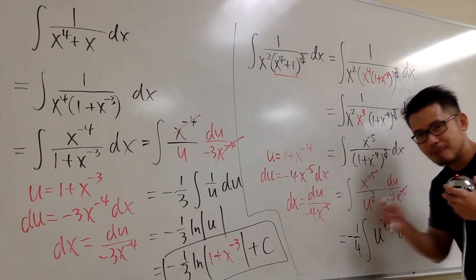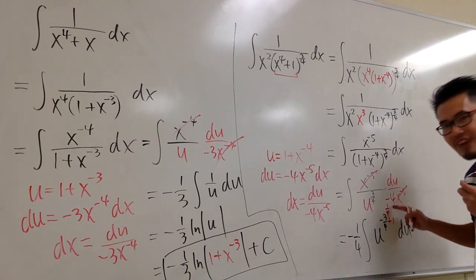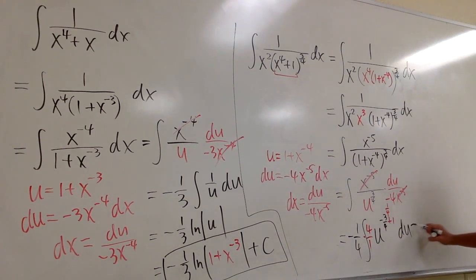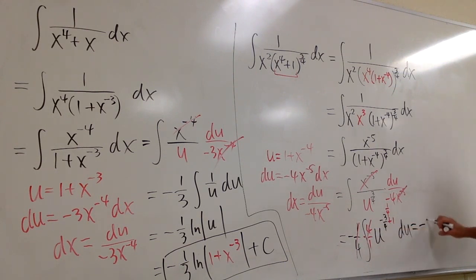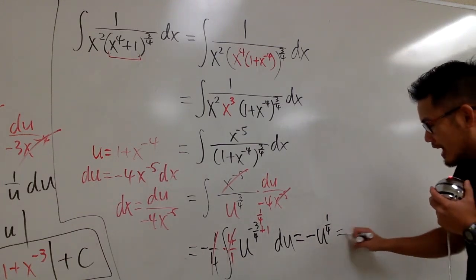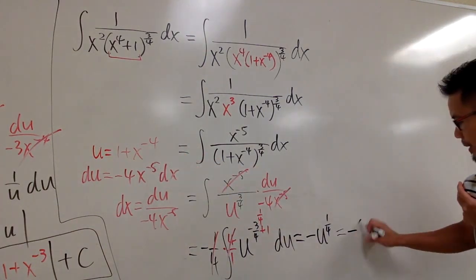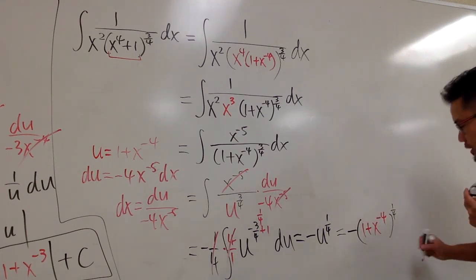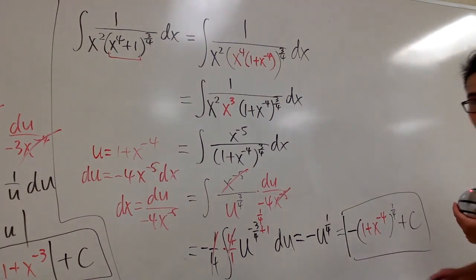Integrating using the power rule backwards: add 1 to the exponent — negative 3/4 plus 1 equals positive 1/4 — then divide by the new exponent 1/4, which is the same as multiplying by 4. The 1/4 and 4 cancel, but we keep the negative sign. The result is negative u to the 1/4. Substituting back, u is 1 plus x to the negative 4, so the final answer is negative the quantity 1 plus x to the negative 4, raised to the 1/4 power, plus C. You can also write this as negative the fourth root of that quantity. And we're done — cool, huh?